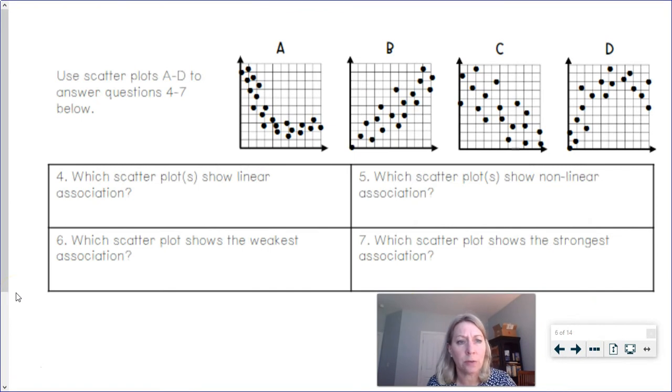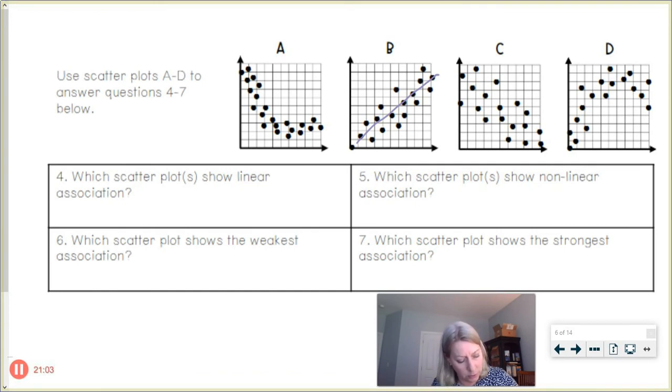All right. Use scatter plots A through D to answer questions four through seven. Which scatter plot or scatter plots show linear association? I would say there's a couple here that show linear. I see B kind of is going a little bit upwards trend in a positive association. And C, even though it's a little more scattered compared to B, it's kind of going in a little bit of a line. So I would say B and C are linear.